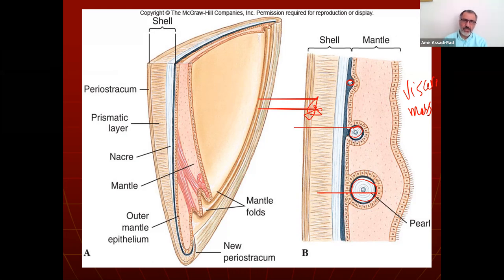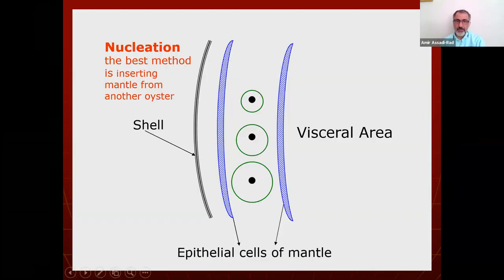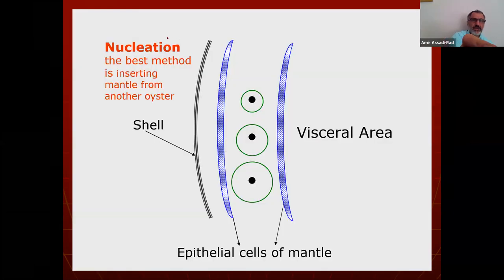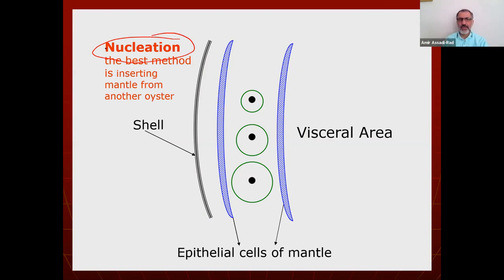The diagram shows periostracum, prismatic layer, nacreous layer, and the shell. The pearl forms outside the nacreous layer where the mantle is. The process is called nucleation, and the best method is inserting mantle from another oyster. Nucleation is not in your textbook, but I'd like you to know it.